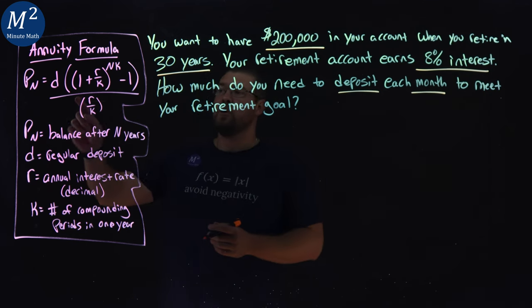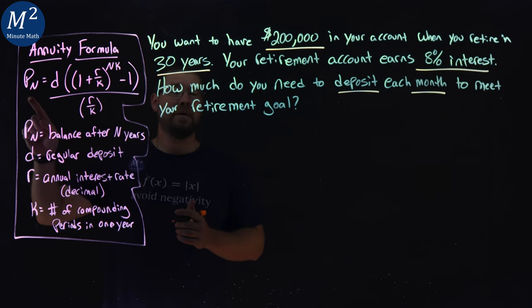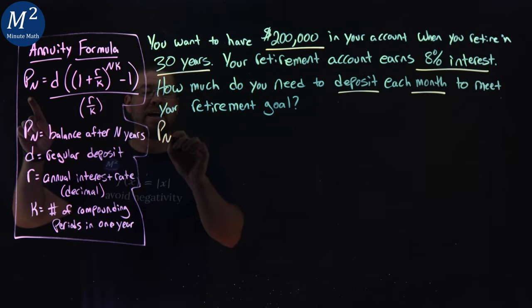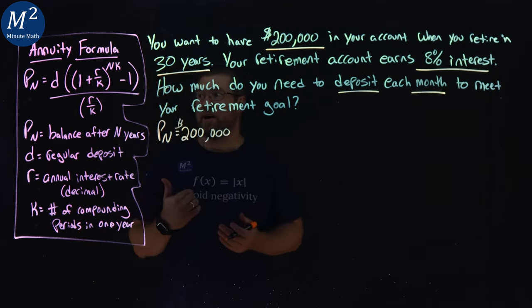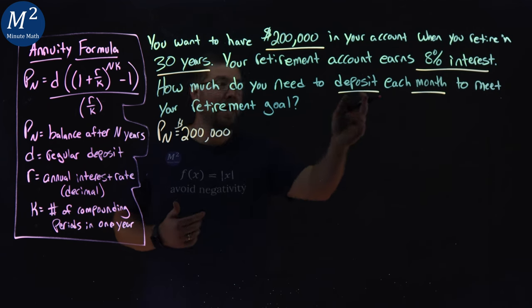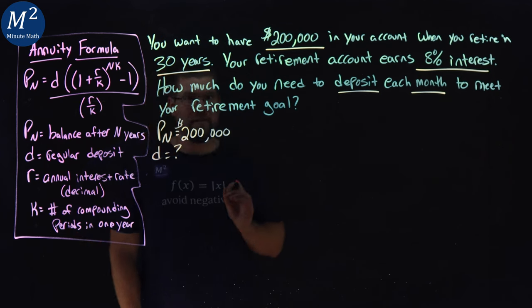How much do you need to deposit each month to meet your retirement goal? Well, again, we're dealing with the annuity formula, but what's different about this time is we know our P sub N. Our end goal we're trying to find is $200,000. What we want to find is how much we have to deposit each month, our D value. So we don't know what that value is yet.